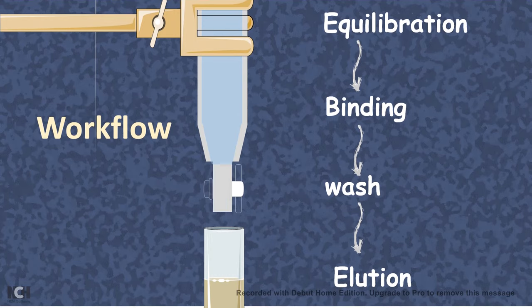Just like any other column chromatography, the workflow is very similar. It starts with the equilibration state, followed by a binding state when the protein or the analyte is binding to the column, followed by a wash where the non-specific binding are removed, and then the elution step when you sequentially get your purified fraction eluted.